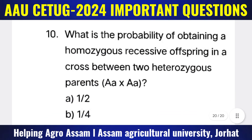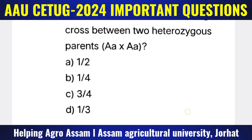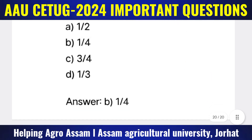Question 10: What is the probability of obtaining a homozygous recessive offspring in a cross between two heterozygous parents (Aa × Aa)? Options: (A) 1/2, (B) 1/4, (C) 3/4, (D) 1/3. The correct answer is option B — one by four (1/4).